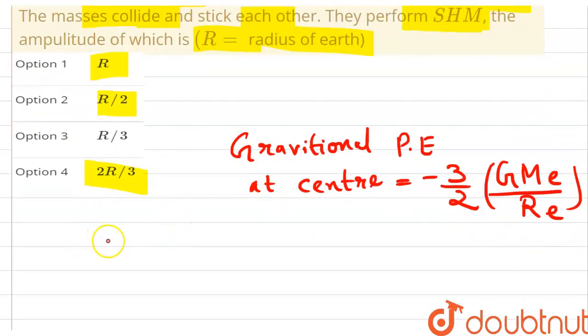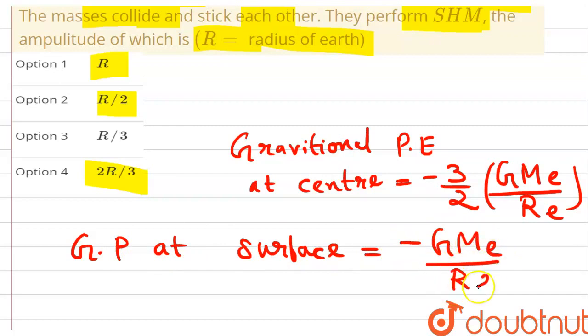Gravitational potential at surface is equal to minus 3 by 2 times GMₑ divided by radius of earth.